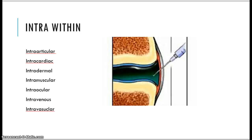Intra means within. The picture here shows intraarticular — putting medication into that articular space. Intra as a prefix is used with things like intradermal and intramuscular, which are injections we do with needles. Intraocular is into the eye. Intravenous is into the vein, and that's starting your IV and giving fluid.